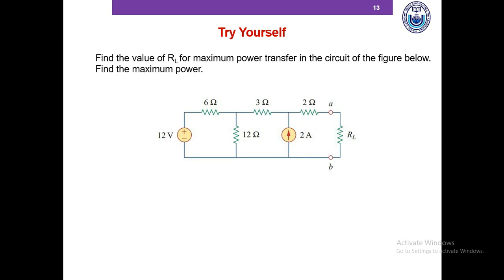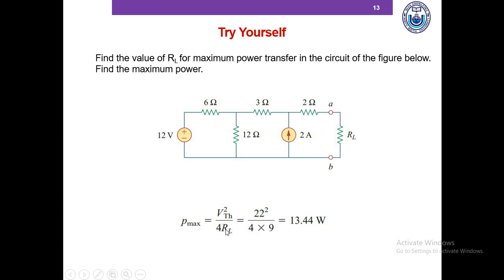We'll now solve a problem to consolidate our understanding, so please pause this video, solve the problem, and then we'll match our answers. It is clear from the equation that you need to determine the Thevenin equivalent to apply the maximum power transfer theorem, because you need VTH and RTH since Pmax equals VTH² divided by 4RTH.